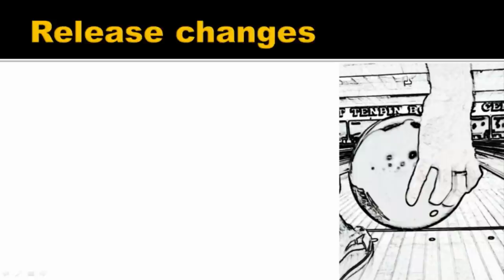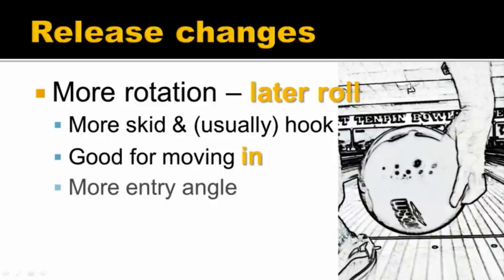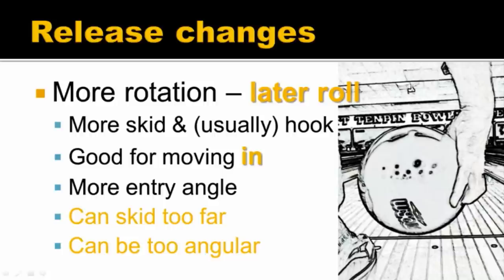Talking about release changes — here's a shot of my basic release. It's about a 45-degree release. It gives me a good starting point, provides sufficient skid and hook, and a good entry angle — it's 'normal.' If, however, I see the lanes hooking earlier and I need the ball to get further down the lane, I can apply more rotation to create later roll. This way the ball is skidding sideways more, creating more skid and usually a little more hook off the back. It's a good release change when I want to move inwards because it creates more entry angle. It does come at a price though — it can skid too far if I've made the wrong move, and it can be too angular if the lanes are really back-ending hard, leaving nasty splits. It's about knowing my game and knowing what's happening in front of me.